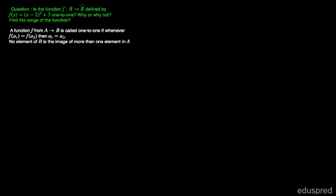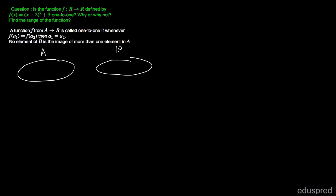Let's first understand a one-to-one function. A function f from A to B is called one-to-one if whenever f(a1) is equal to f(a2) then a1 should be equal to a2. If you have a set A and a set B and there is a mapping f from A to B, so your A is the domain and B is the range.